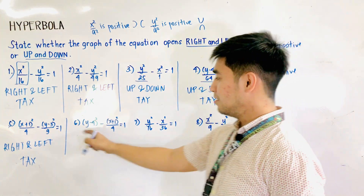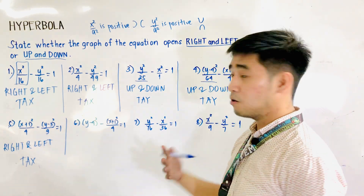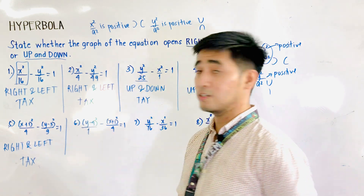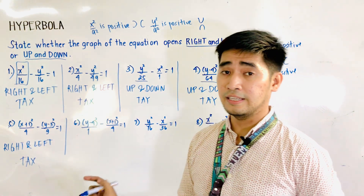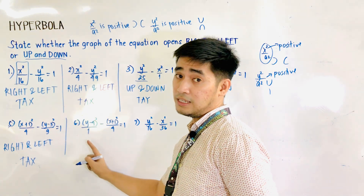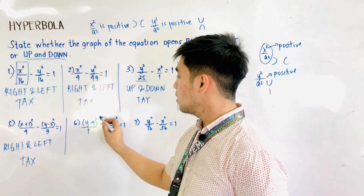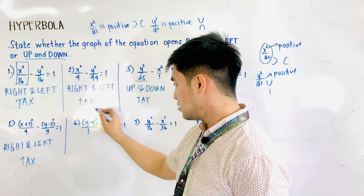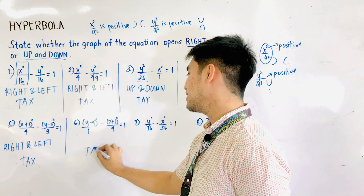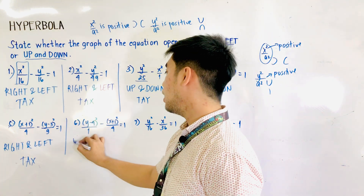For the next one, we have y minus 4, quantity squared, minus x plus 1, quantity squared, over 4 is equal to 1. Again, since it doesn't contain a denominator for the y term, just put 1 in the denominator. So a squared is equal to 1 and b squared is equal to 4. Since the positive term comes with y, we could say this is TIE. And when we say TIE, it will open up and down.